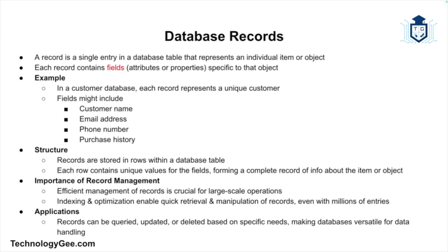Next, let's talk about database records. A record is a single entry in a database table representing an individual item or object. Each record consists of fields, which are attributes or properties of that object. For example, in a customer database each record would represent a customer, and fields might include the customer's name, email address, phone number, and purchase history. Records in the database are stored in rows, with each row containing a unique set of values for the defined fields. The collection of records in a table can be queried, updated, or deleted as necessary.